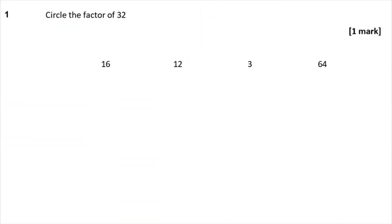Question 1: Circle the factor of 32. A factor of a number is a number that divides into your number without giving a remainder. So you've got one choice only — it's 16. Because 32 divided by 16 is 2, none of the others will divide into 32 without a remainder. So it's got to be 16.